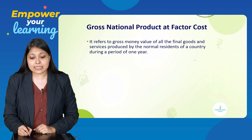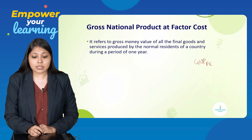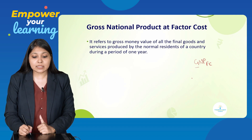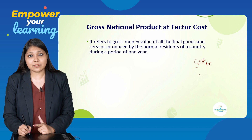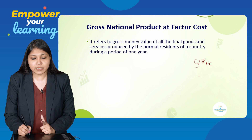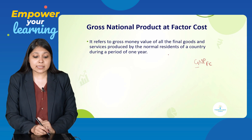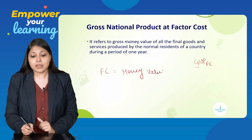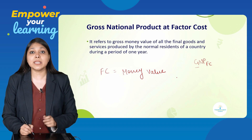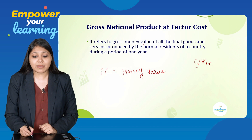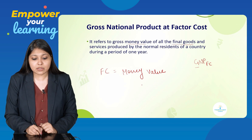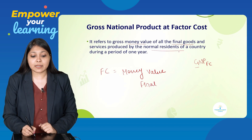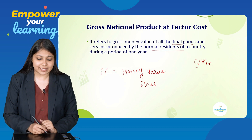The second national aggregate is GNP at FC — Gross National Product at Factor Cost. G stands for gross — actual value inclusive of depreciation. N stands for national — goods produced by normal residents of the country. FC means factor cost, written as money value — the cost at which goods are produced. It refers to the gross money value of all final goods and services produced by normal residents during a period of one year.